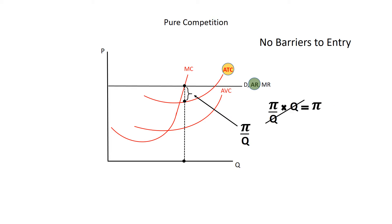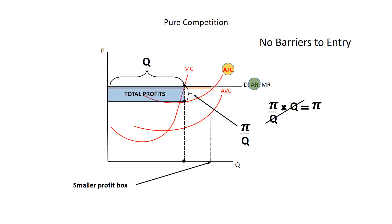If we multiply per unit profit by Q, we get total profit. Here's the distance Q on the graph. When we multiply per unit profits — the bracketed vertical distance — by Q, the bracketed horizontal distance, we get the area of this blue box. We can call this the total profit box because its area is per unit profit times quantity, the number of units produced. Given this market price, which this purely competitive firm must accept, there is no other level of output that would give a larger profit box. Other levels of output would produce a smaller profit box. So this firm is maximizing its profits given this market price.